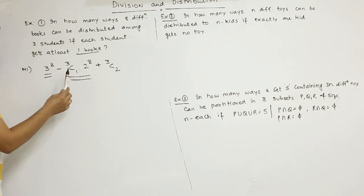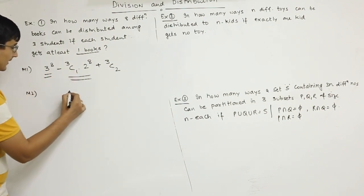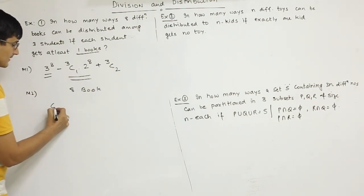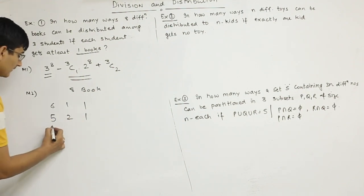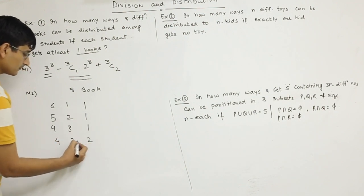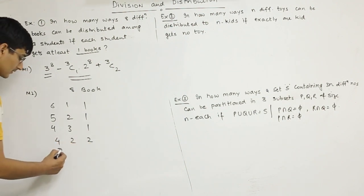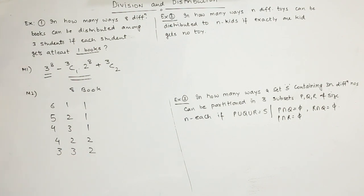This is the total. We removed those cases where exactly one student is not getting anything. This is the formula we saw in the previous video. Or you can make cases: if 8 books, one case is 6-1-1, one case is 5-2-1, one case is 4-3-1 and 4-2-2, one case is 3-3-2. These 5 cases will work, and then you multiply by 3 factorial.